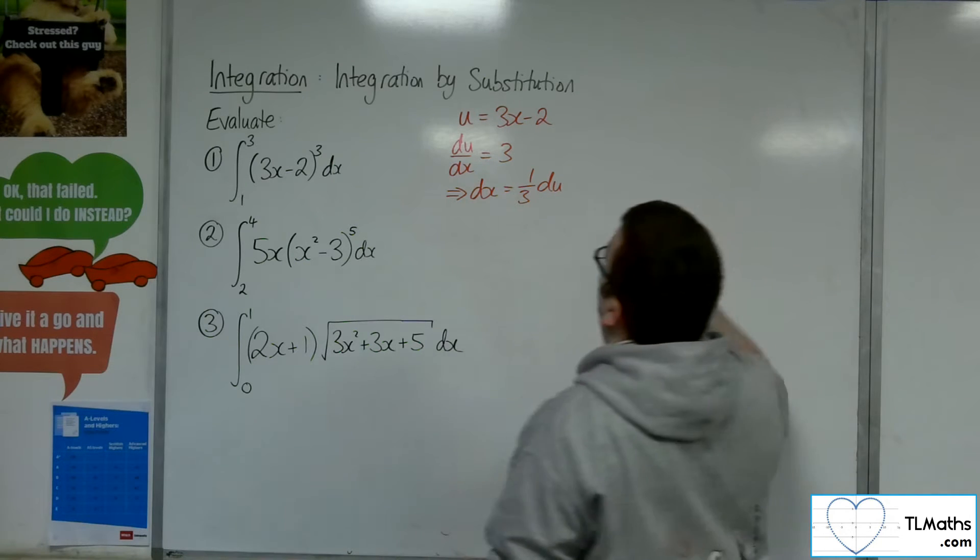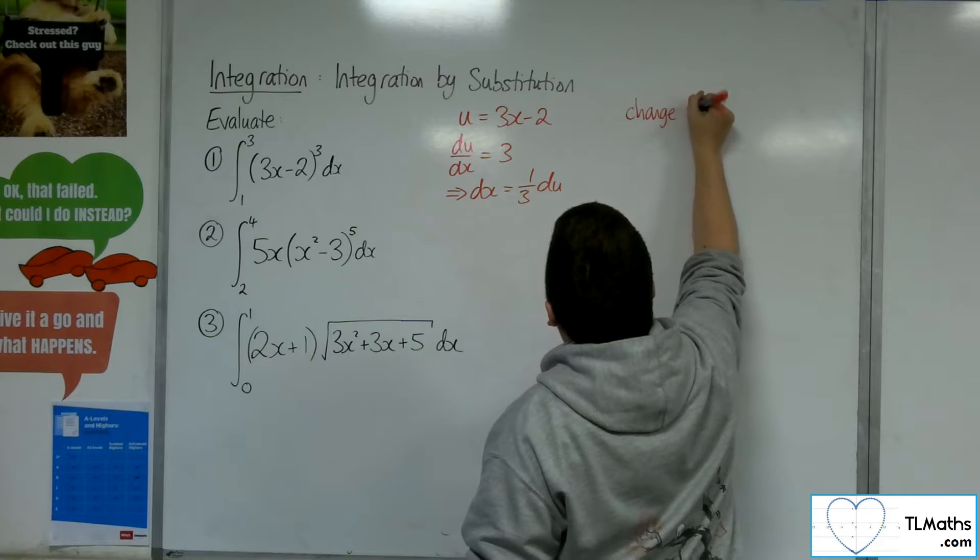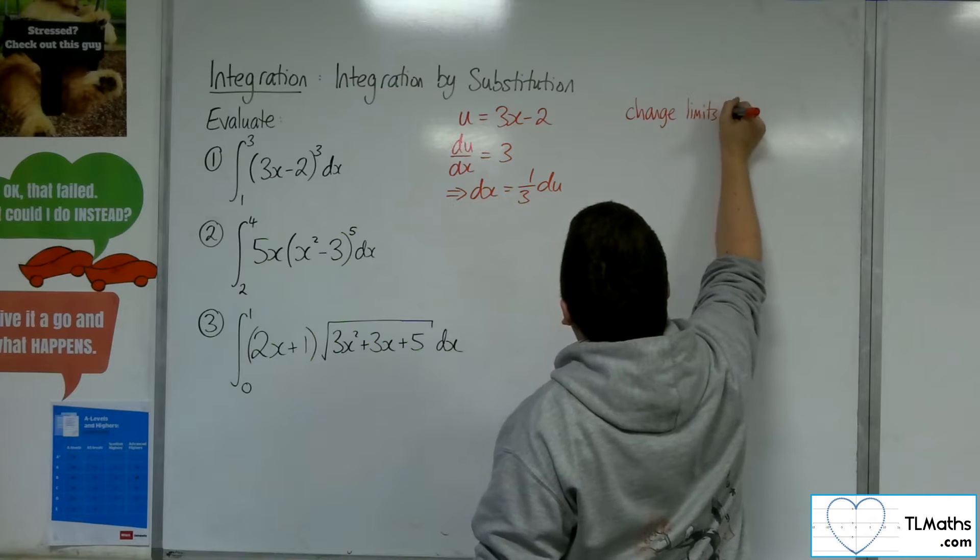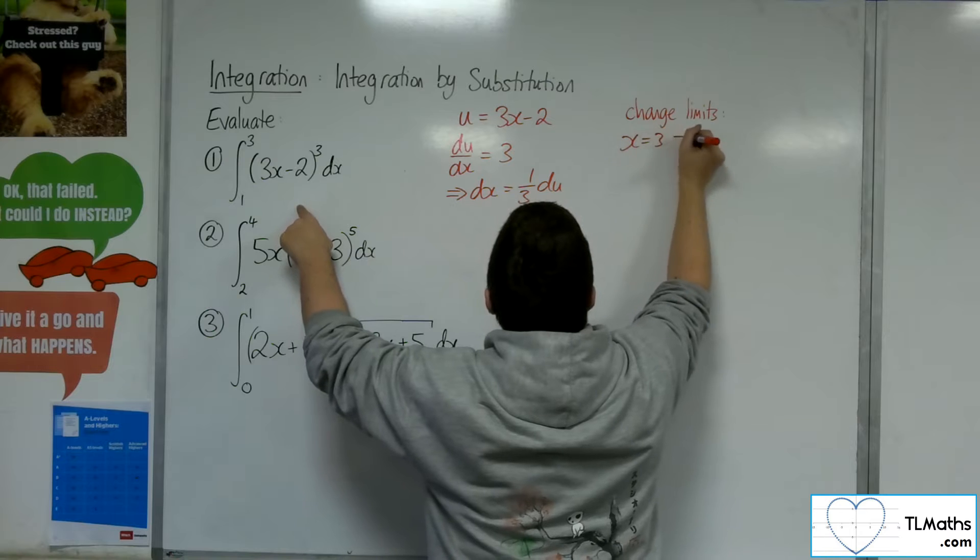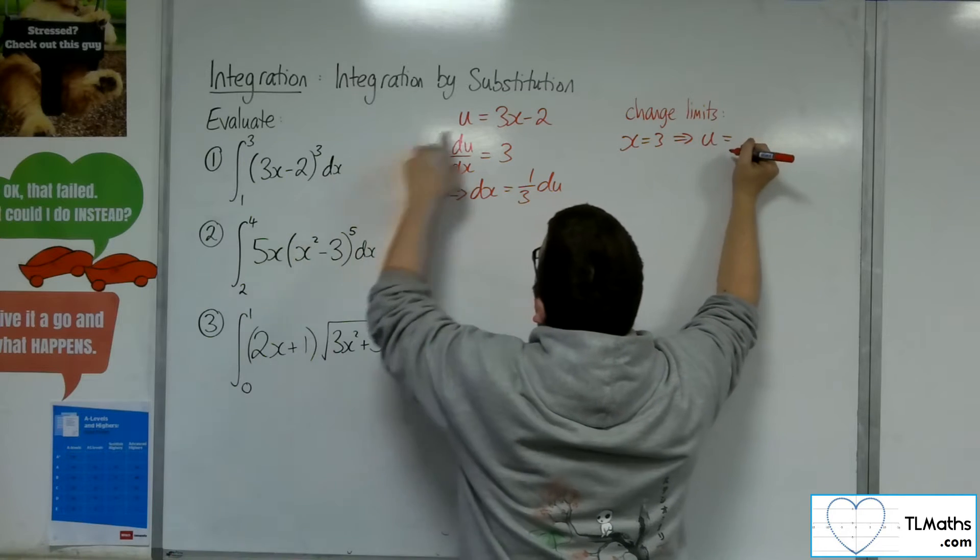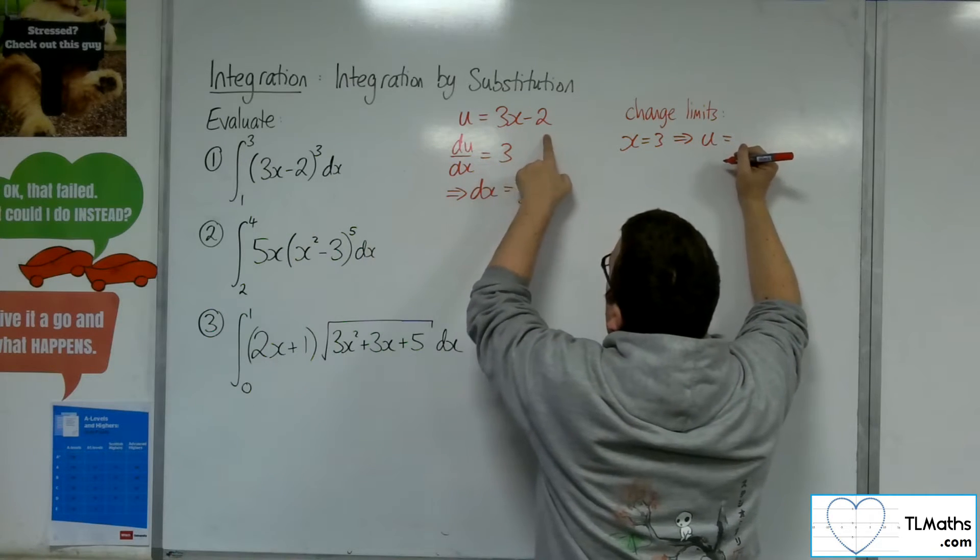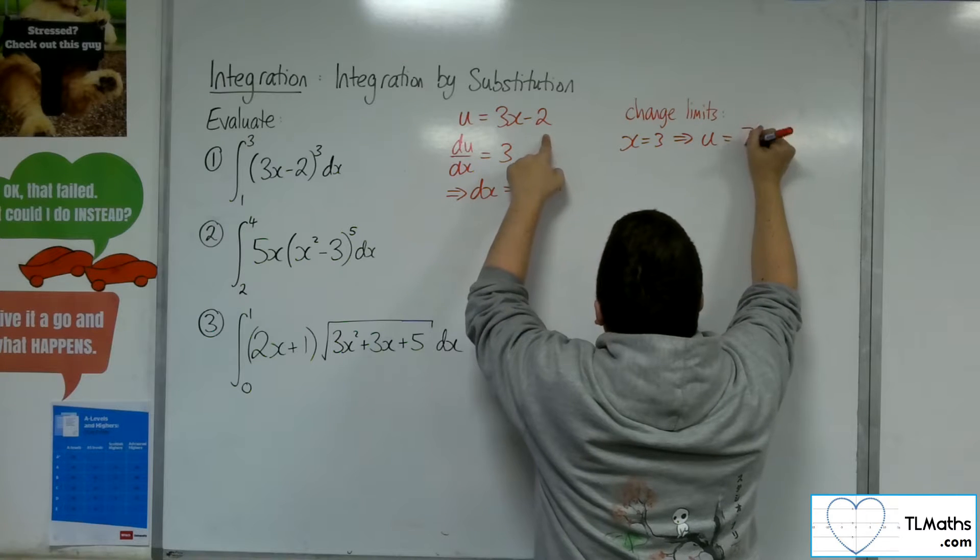Now we go into changing the limits. So we're going from 3 to 1. When x is 3, u will be 3 lots of 3 take away 2. So that's 9 take away 2, which is 7.